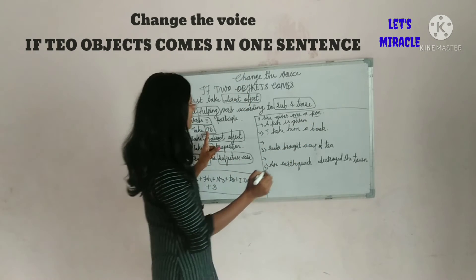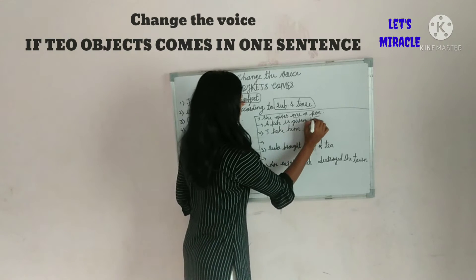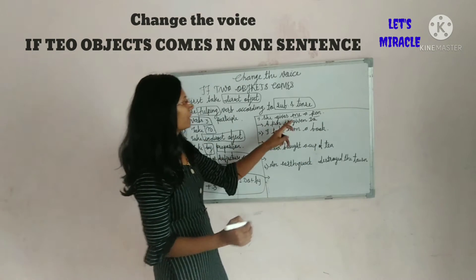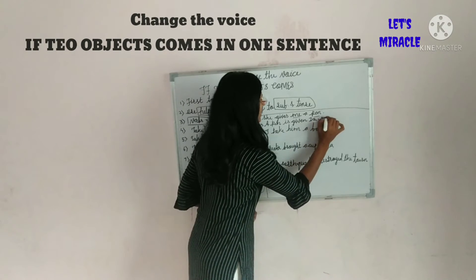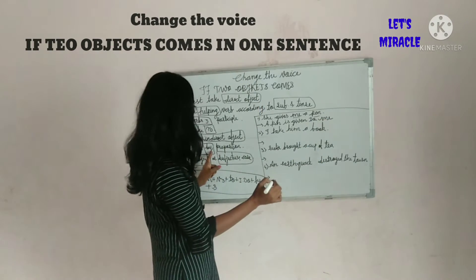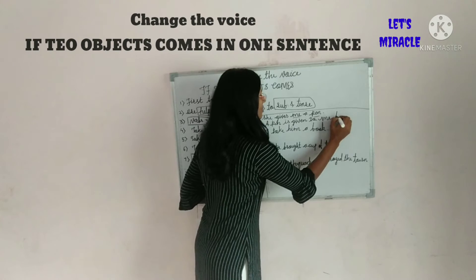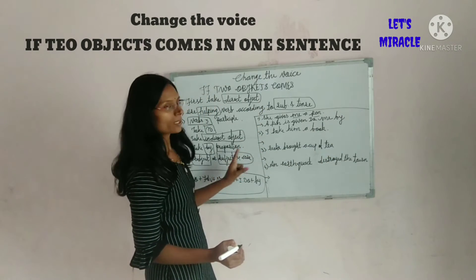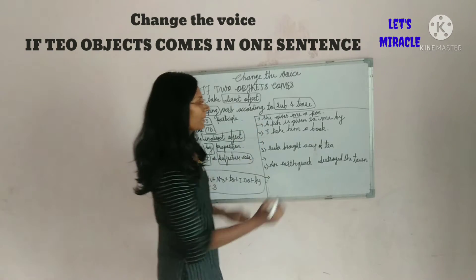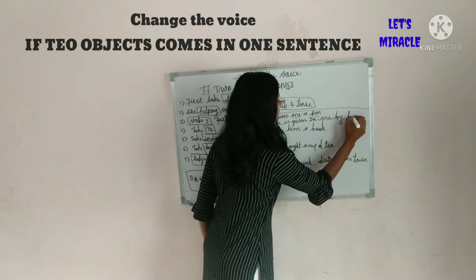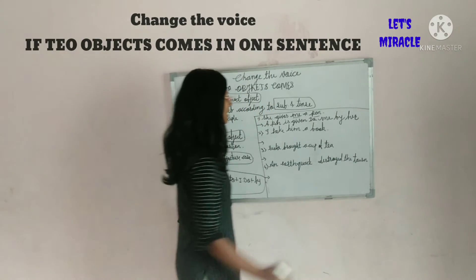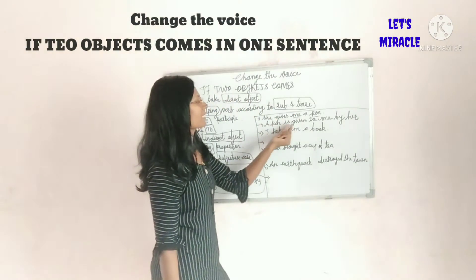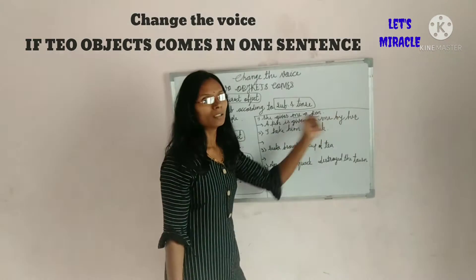A pen is — then take V3, so 'give' becomes 'given'. Then take 'to'. The indirect object 'me' follows. Then 'by' as a preposition. The subject 'she' becomes 'her'. So the sentence changes: 'She gives me a pen' becomes 'A pen is given to me by her'.